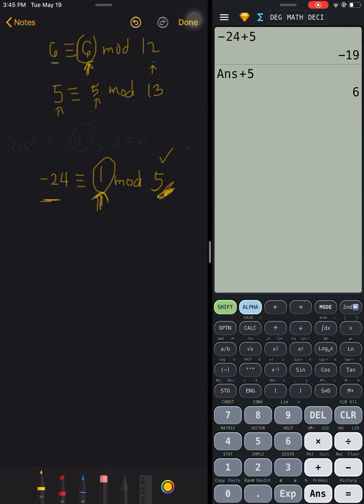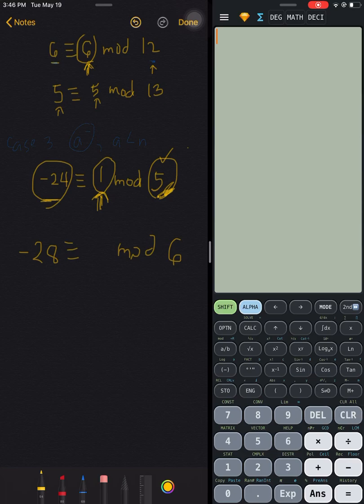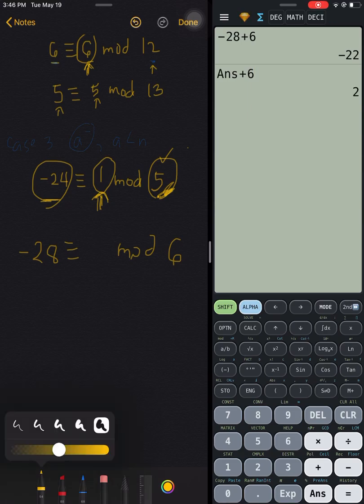There you go. So that's how you do case 3. If you are having a negative number here, don't subtract this number, but add. So for example, if we have negative 28, and what if we do this time modulo 6, let's do that. Negative 28 plus 6, plus 6, equals, equals, the answer there is 2.